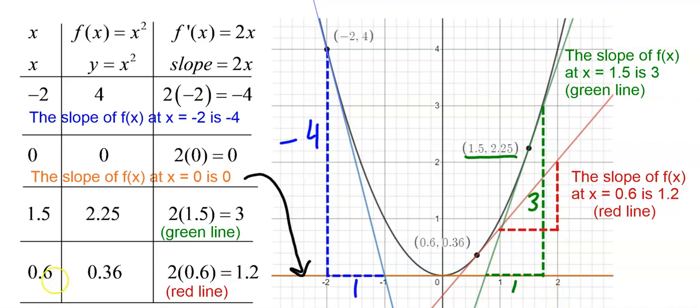The last one. When x is 0.6, y is 0.36. And the slope is 2 times 0.6, which is 1.2. So the red line, which is tangent to this point right here, has a slope of 1.2. So you can see right here, from here to here is 1. And the little grid marks, there's 5 grid marks for every 1 unit. So this goes up 1 unit plus another 1 fifth, which is 1.2. So this is 1.2 right here.